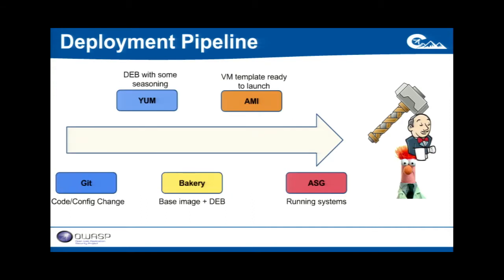I want to go into how Netflix automates a lot of our processes around this sense of enablement for our developers. It really starts with a piece of code maintained and versioned in something like Git. Once the developer feels this is something they want to test or try out, they'll have Jenkins build that piece of code into a package.